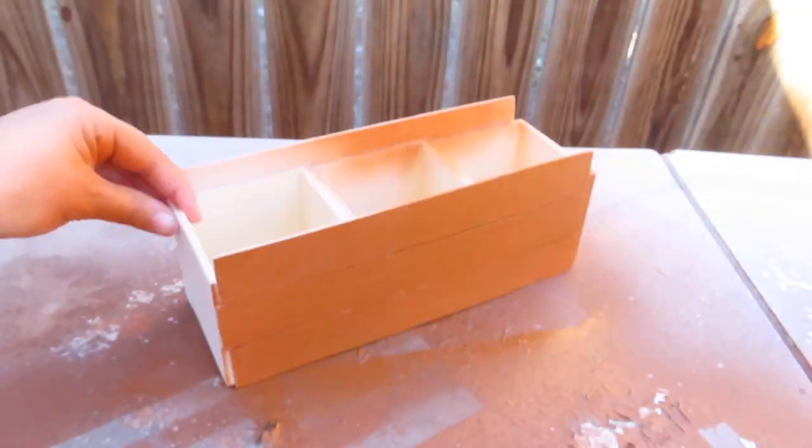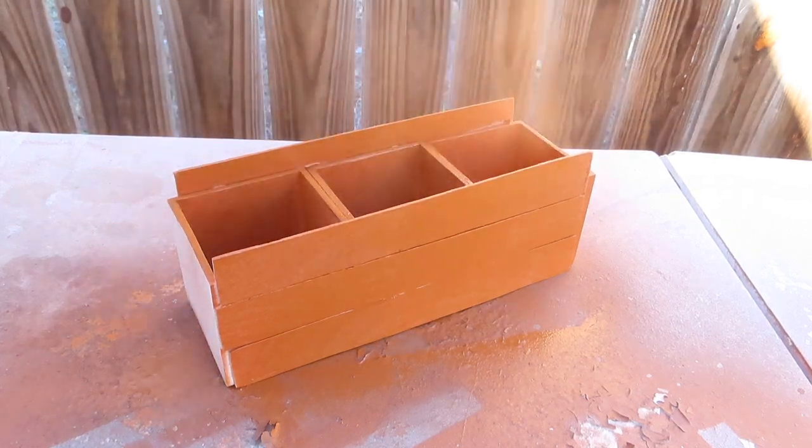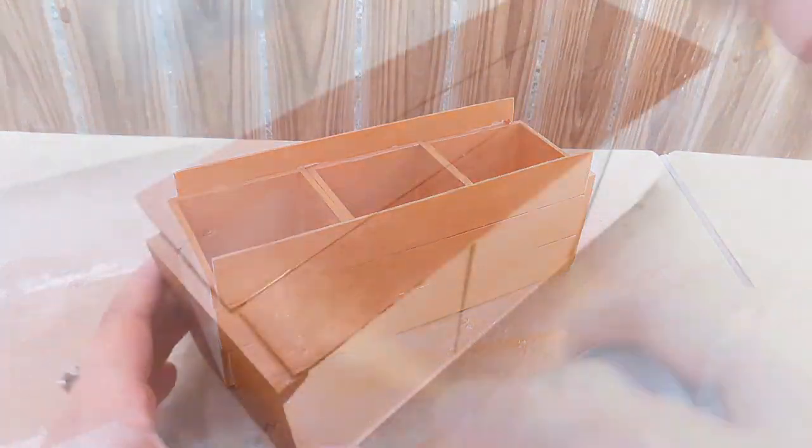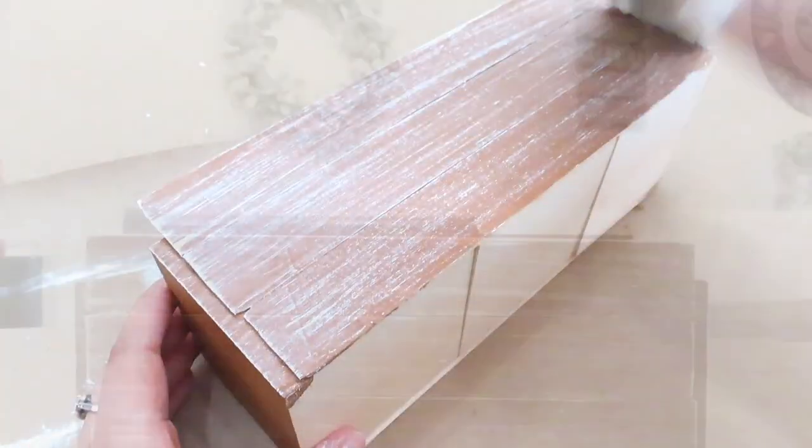Now I'm going to be spray painting it with the color warm caramel and I let it dry for 10 to 15 minutes. I decided to add some ivory chalk paint just to make it look a little bit more distressed.